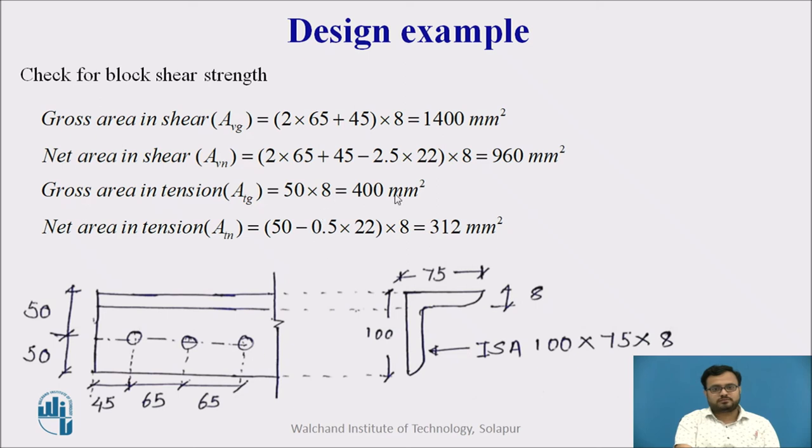We will get the net area in shear. For tension, gross is similar. 50 into 50 is this length. So 50 into 8 and to determine the net area, we have to subtract this half bolt. For shear this, for the shear plane, it cuts this bolt completely. It cut this bolt completely and it cut these bolts partially. Half bolt get cut in shear. And for tension, similar. This bolt gets cut only partially.